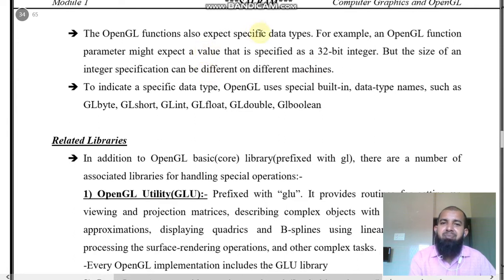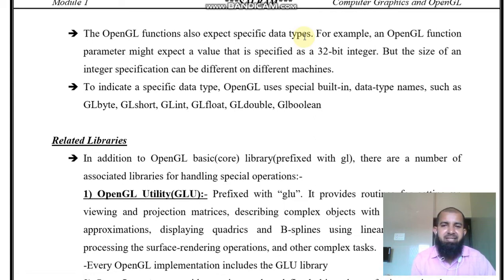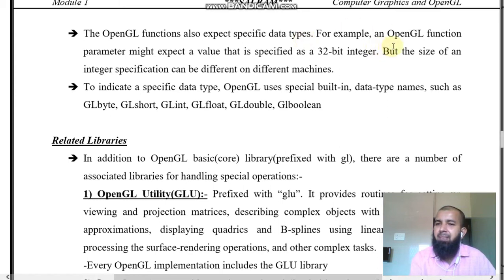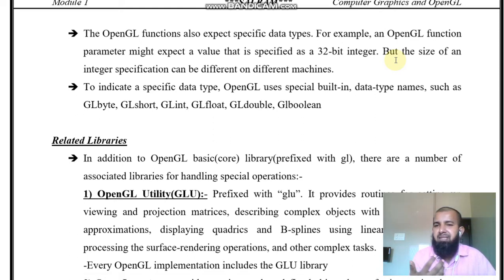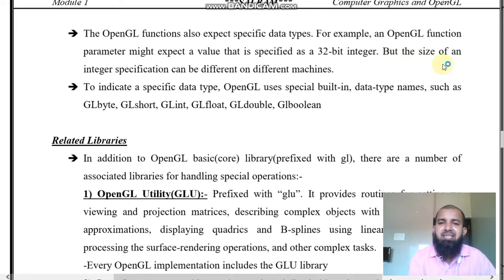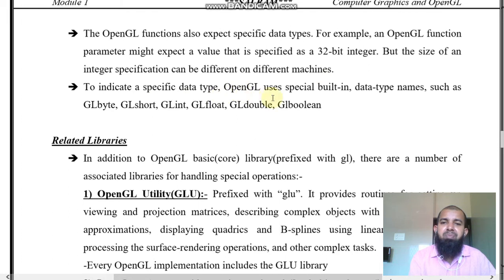The OpenGL functions also expect specific data types. In C and C++, we have int, float, char, double, long int, and so on. There are some data types in OpenGL as well. An OpenGL function parameter might expect a value specified as a 32-bit integer. The size of an integer can be different on different machines — some systems use 32-bit, some 64-bit. To indicate specific data types, OpenGL uses special built-in data types.